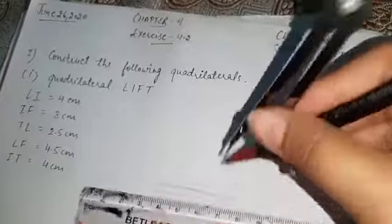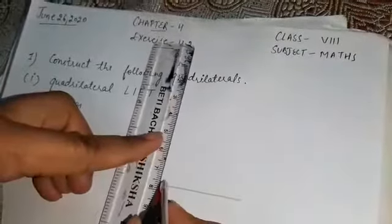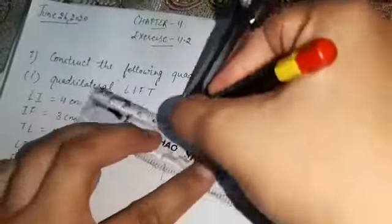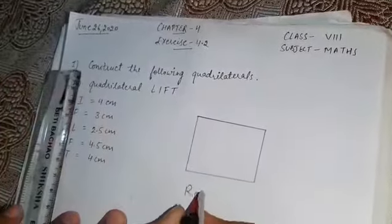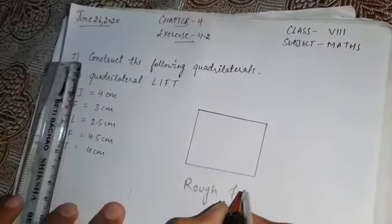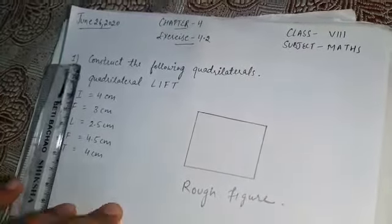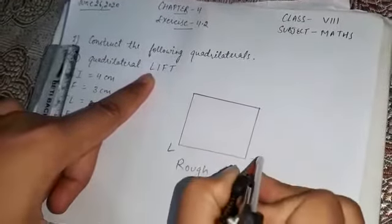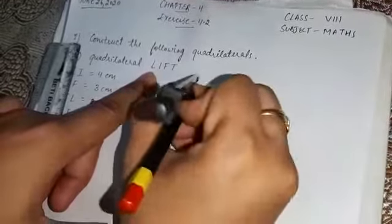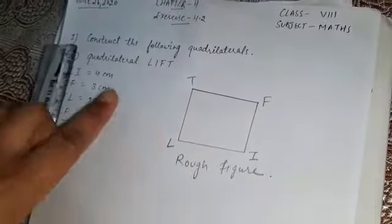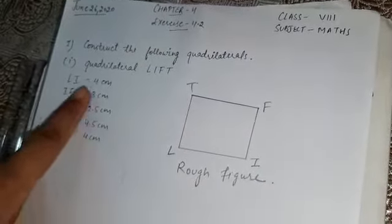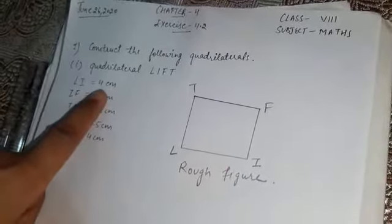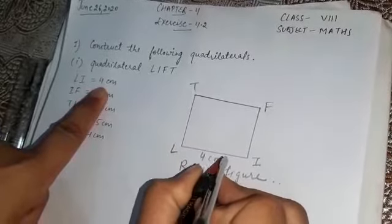Without any measurement, you can draw a quadrilateral as the rough figure. Mention that it is a rough figure. Now name this figure as LIFT. Next step is to write the measurements. LI is 4 centimeters, so mention that.